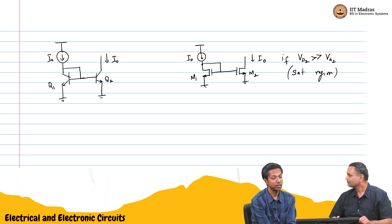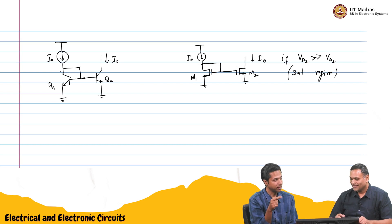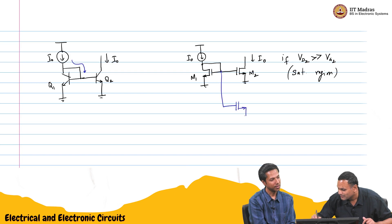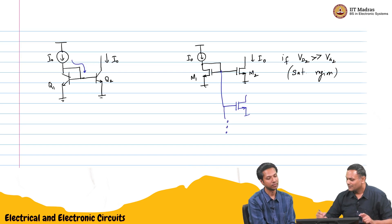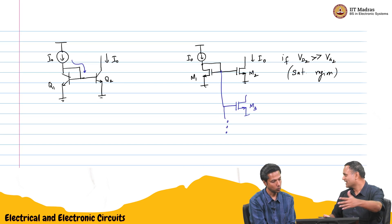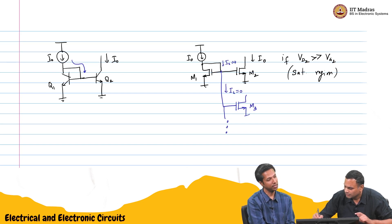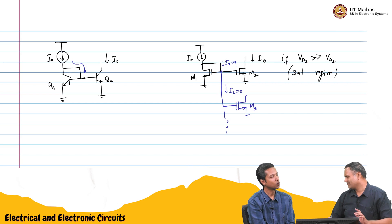In case of BJT, there was some issue when you have more number of mirrors because you are drawing off base current here. Good thing is that does not happen here. Very good point. I can build as many mirrors as I want. That is a nice thing about the MOSFET-based current mirror. I can mirror this as many times as I want because the gate current is zero. And if I want different current, change the W by L.